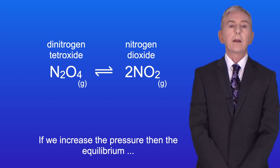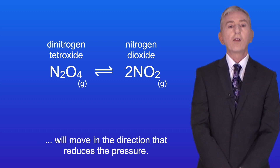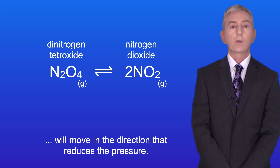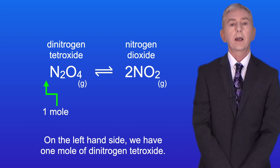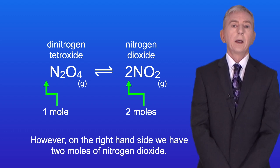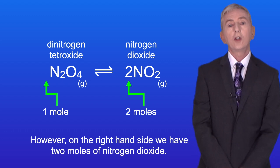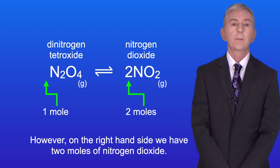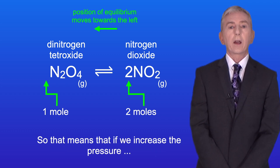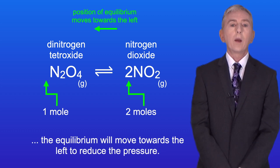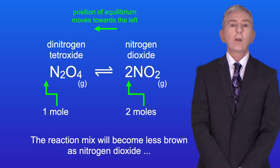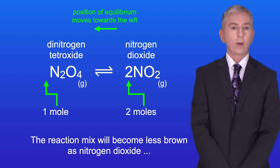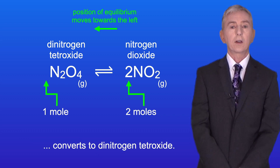If we increase the pressure then the equilibrium will move in the direction that reduces the pressure. On the left hand side we have one mole of dinitrogen tetroxide, however on the right hand side we have two moles of nitrogen dioxide. So if we increase the pressure the equilibrium will move towards the left to reduce the pressure. The reaction mix will become less brown as nitrogen dioxide converts to dinitrogen tetroxide.